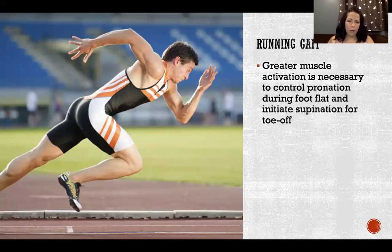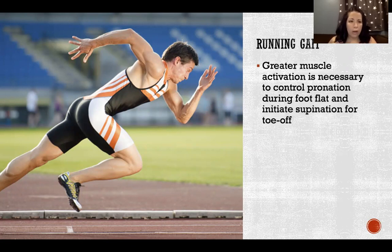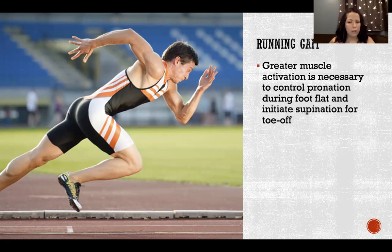In running gait we have greater muscle activation, especially to control pronation during foot flat and to initiate supination for toe off. There are significantly higher forces going through the ankles and the foot into the ground during running compared with walking, and so it takes much greater muscle activation to control pronation. Without that activation we don't have as good control of pronation, and that's where we might go into hyper pronation during foot flat.